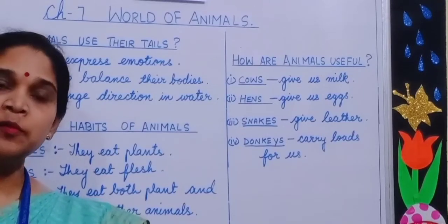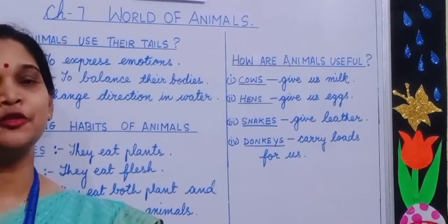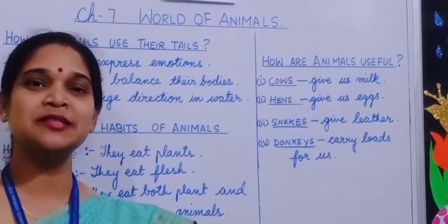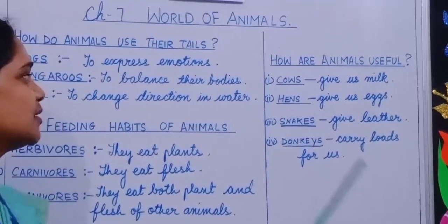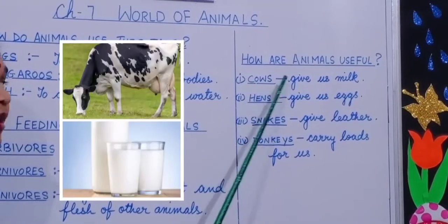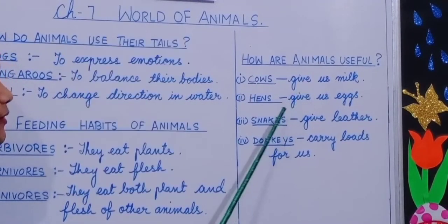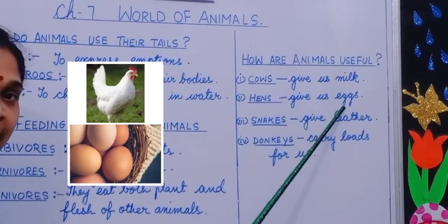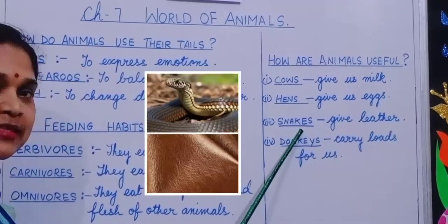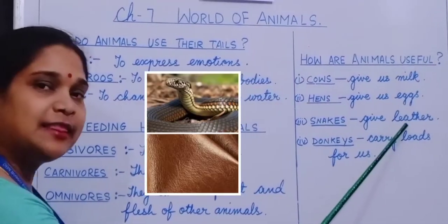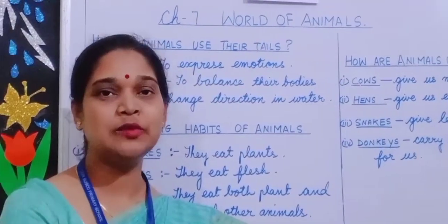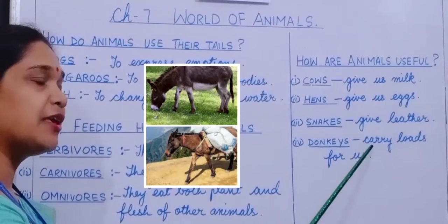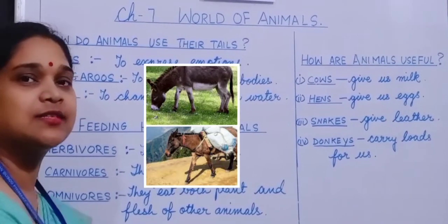Animals are useful to us. Let's see how these animals are useful to us. Cows give us milk. Hens give us eggs. Snakes give leather — their skin is used to make leather. Donkeys carry loads for us.